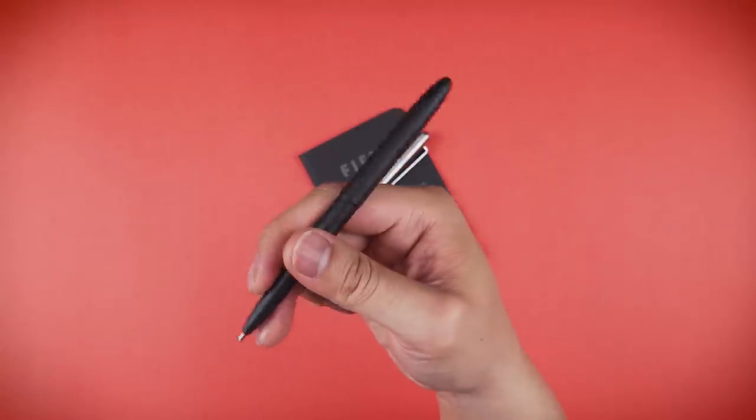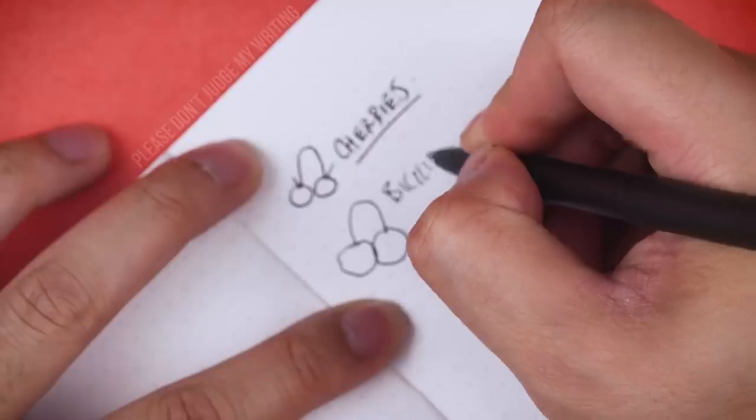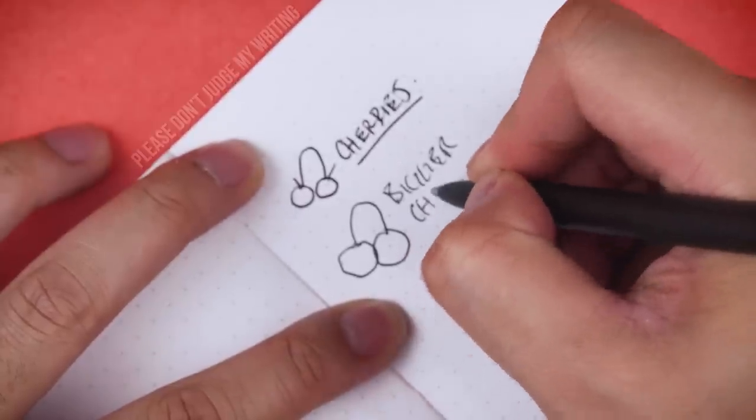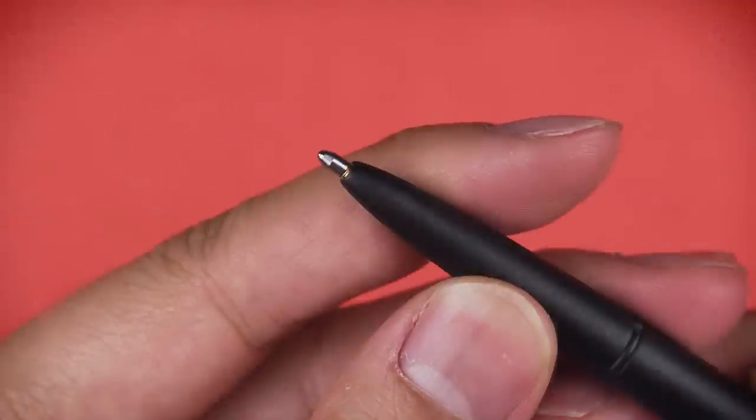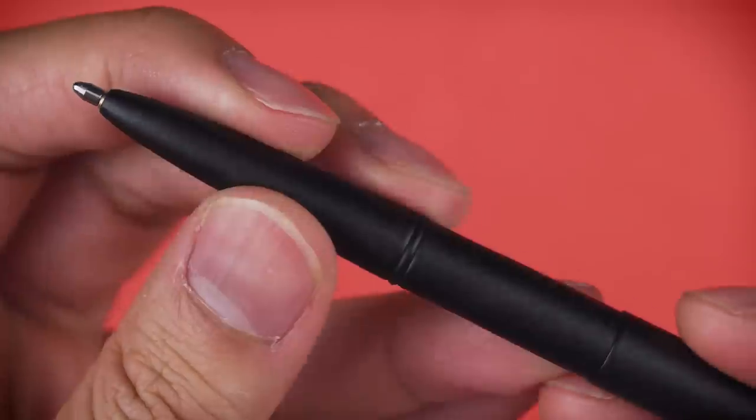These babies have a pressurized cartridge which allow you to basically write in any direction, even upside down. It's smooth, the matte finish feels good between my fingers, and it's just a tiny little pen you'll always have on you because why not? It's as big as a finger for goodness sake.